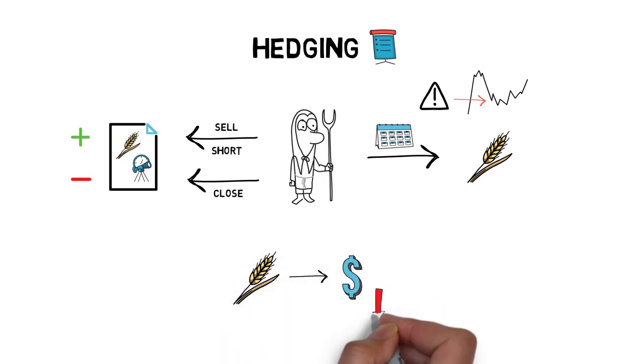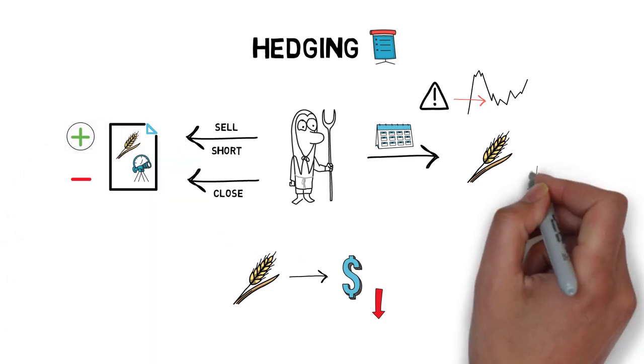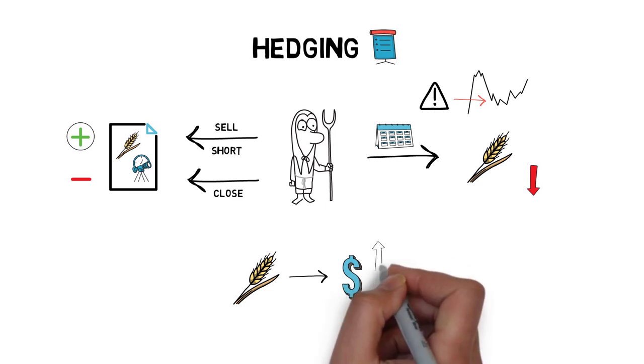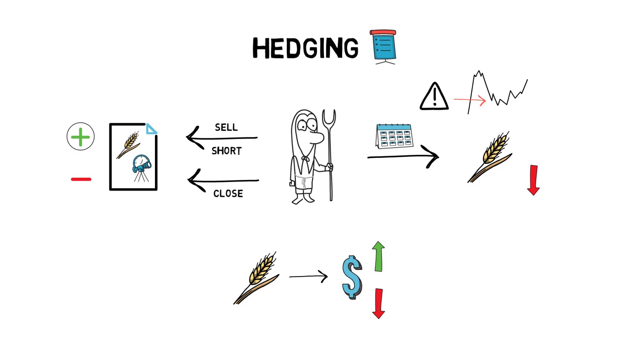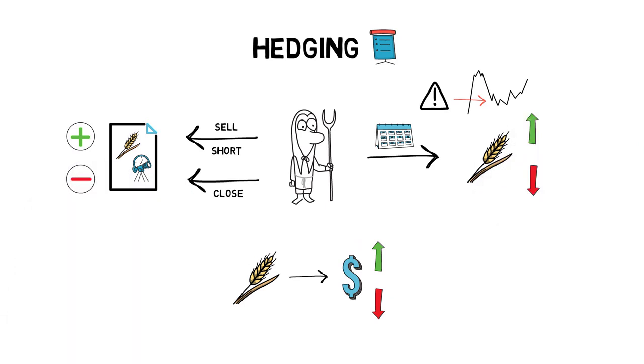If the price of wheat is lower than initially anticipated, the short position makes a profit that offsets the loss from selling the actual wheat. If the price of wheat is higher, the short position will be at a loss, but the profit from selling the wheat offsets that loss. What is important to understand is that no matter what happens to the wheat price, the farmer will end up with a predictable income.